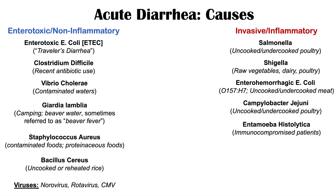Another cause of invasive acute diarrhea is Entamoeba histolytica, a protozoal amoeba found more often in immunocompromised patients such as those with AIDS or on chronic steroids — it can also cause liver abscesses. To summarize: the two main categories of acute diarrhea causes are enterotoxic/non-inflammatory — including ETEC, Clostridium difficile, Vibrio cholerae, Giardia lamblia, Staphylococcus aureus, Bacillus cereus, norovirus, rotavirus, and CMV — and invasive/inflammatory — including Salmonella, Shigella, Enterohemorrhagic E. coli, Campylobacter jejuni, and Entamoeba histolytica.